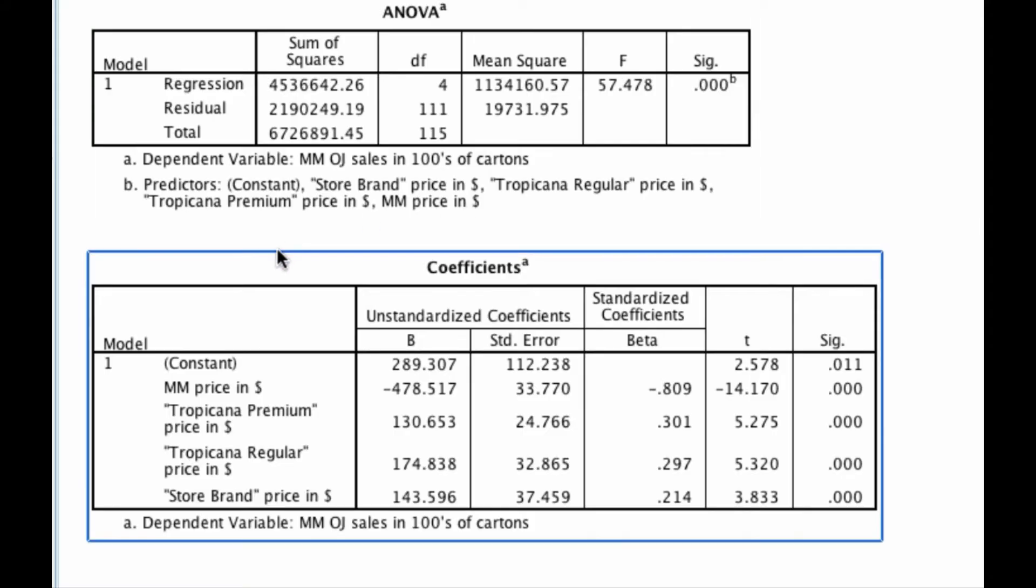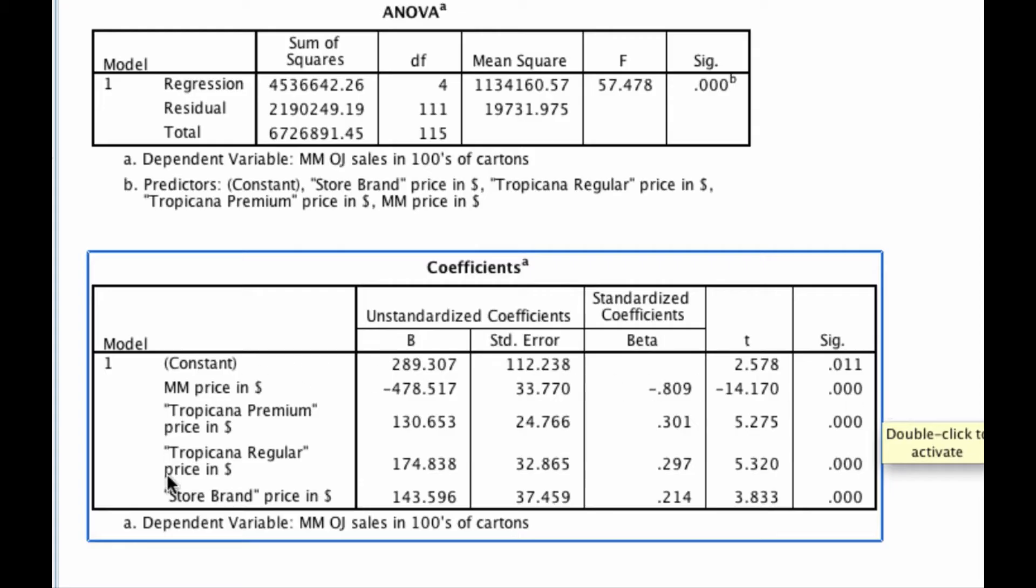If we scroll down to our coefficients, what we find is that all of these are actually significant. In other words, all of these prices influence sales. And so we see that Minute Maid price has a negative effect on sales, such that as the price of my product goes up, my own sales go down. And for the other three, we see that they have a positive effect. So as competitor prices go up, my own sales go up as well.